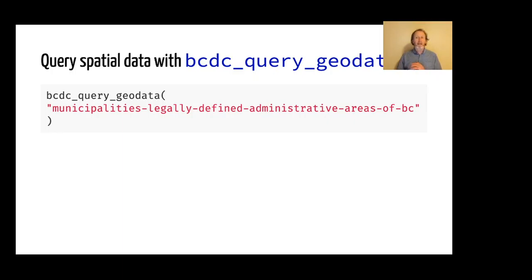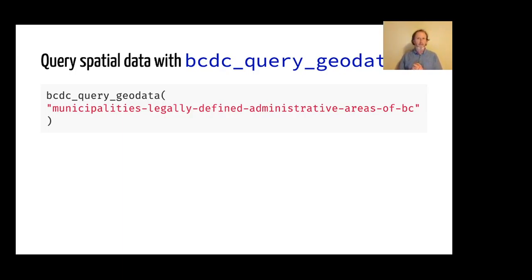The most exciting piece from my perspective is the ability to get spatial data and not only to get it, but to query it. The workhorse there is the bcdc_query_geodata function. It hits the WFS — the web feature service API — to get fine-grained access to geographic information at the feature and property level, allowing us to query that data and get just what we want.